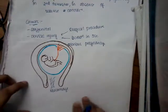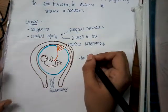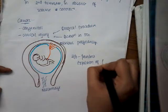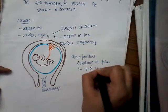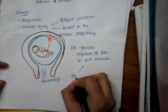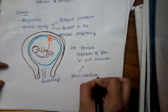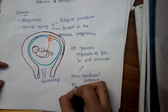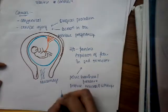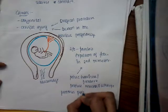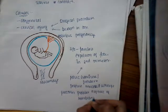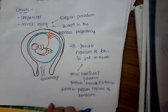What is the history which we take? In the history, there can be painless expulsion of the fetus in the second trimester. Before expulsion, there can be pelvic heaviness or pressure, or there can be profuse mucus discharge. There is also preterm rupture of membranes, also called pre-labor rupture of membranes or premature rupture of membranes. All these can lead to painless expulsion of the fetus. This is what happens in cervical insufficiency.